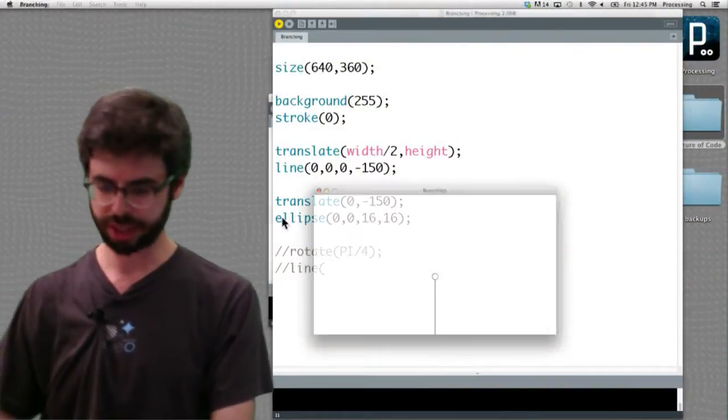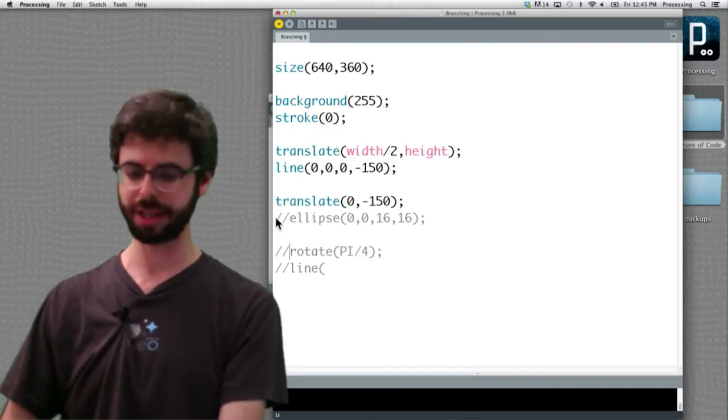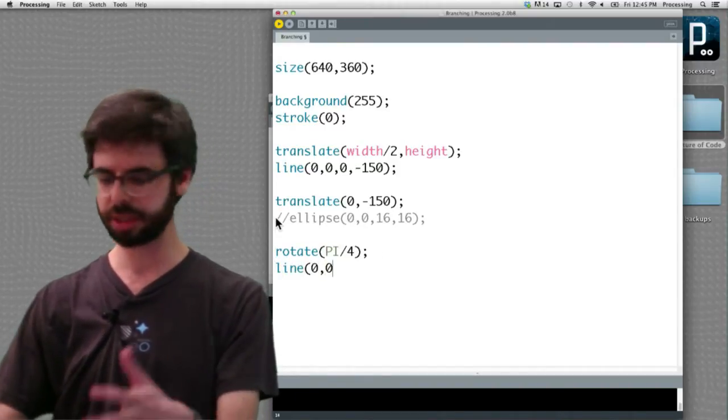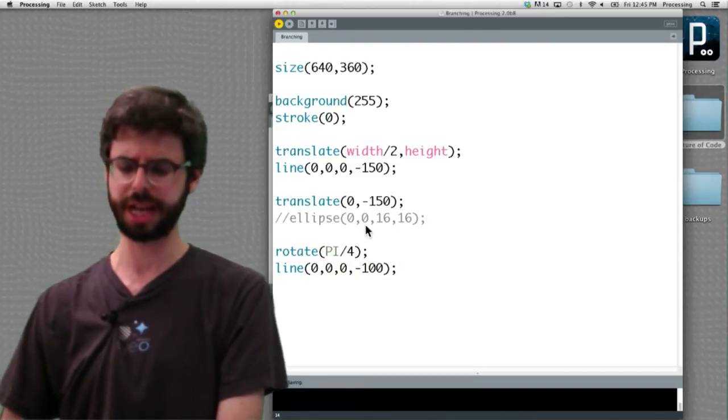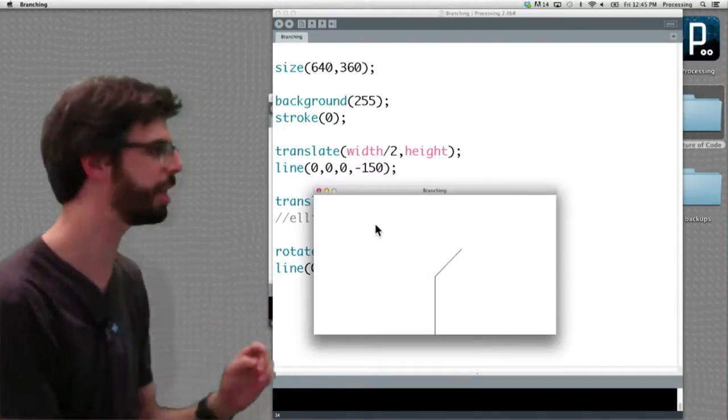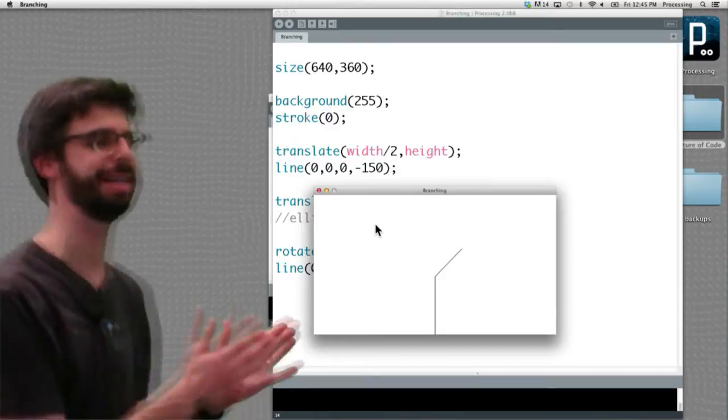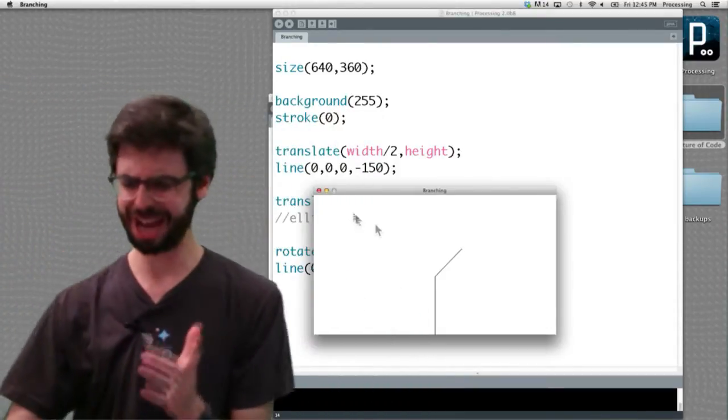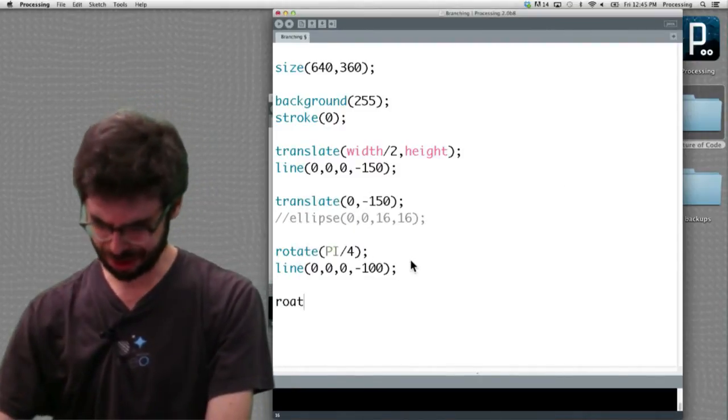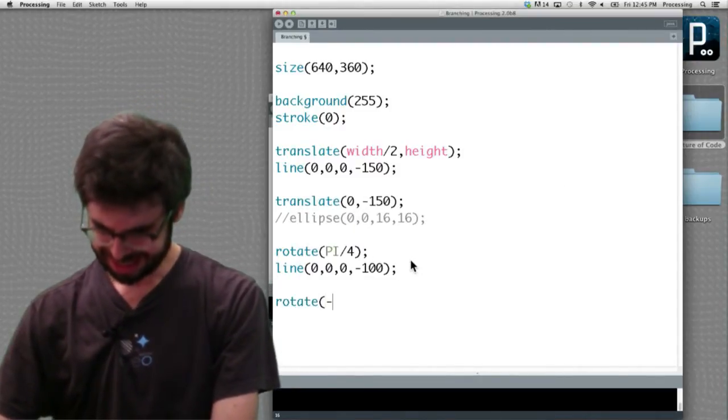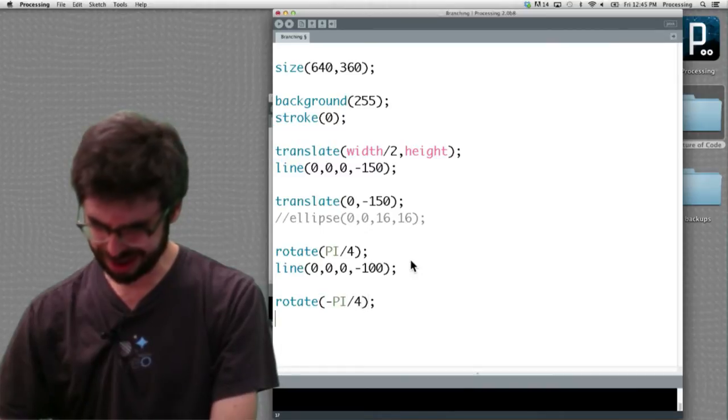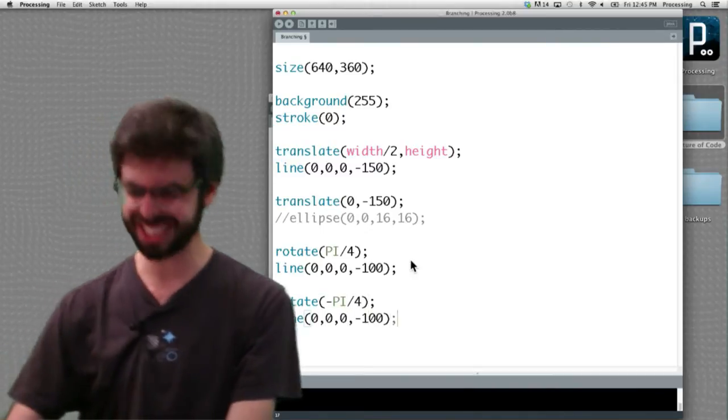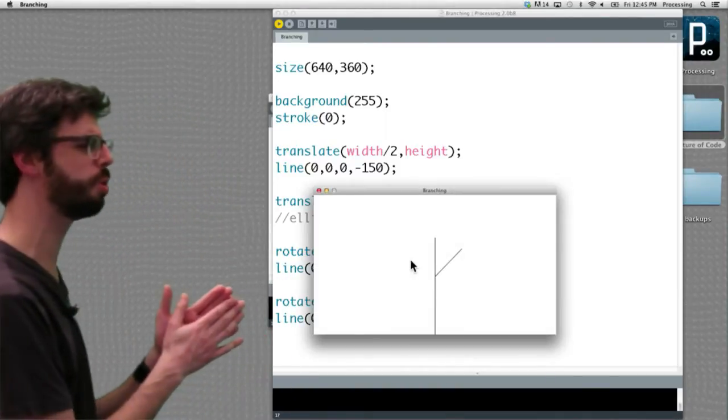So let's go back, and we're going to say, instead of just drawing that ellipse, let's rotate by an angle and draw another line. 0, 0, 0, negative, and we'll shorten it to negative 100. And look at this. Now we have our line going to the right. We need our line going to the left. How do I do that? Rotate negative pi divided by 4, line, 0, 0, 0, negative 100. Will this get it? Oh, this is going to get it. Oh, no.